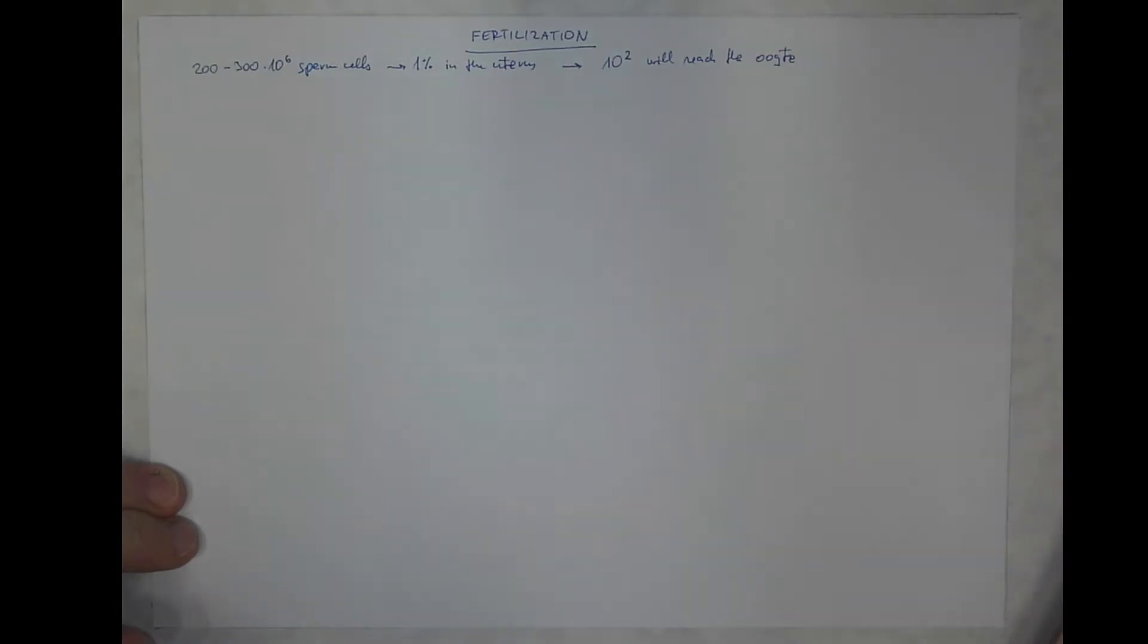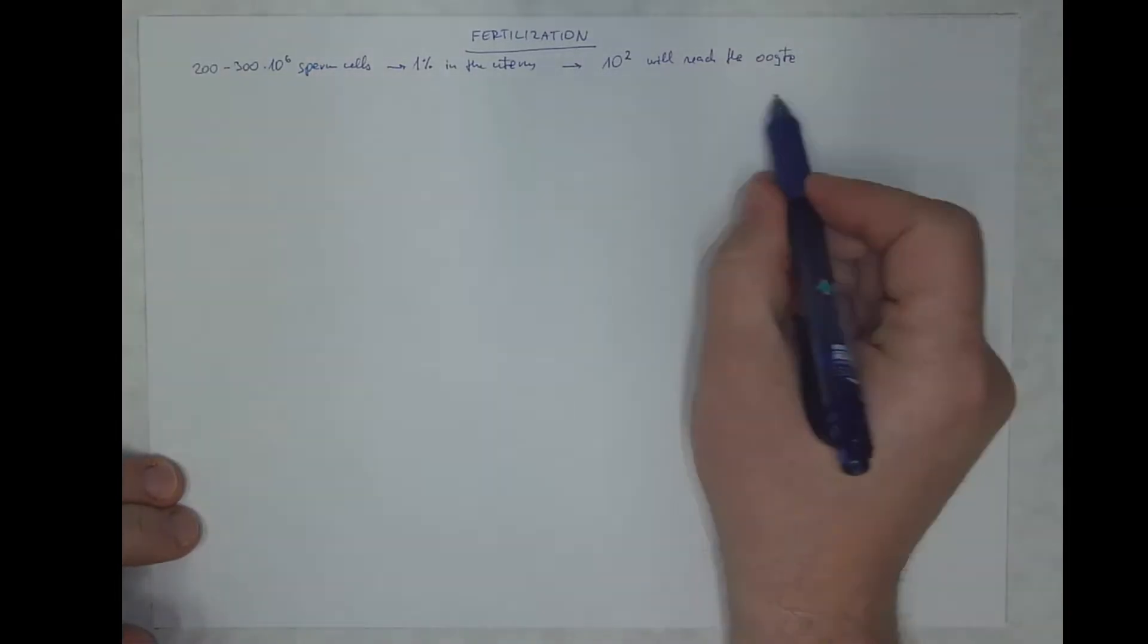So hundreds of sperm cells will reach the oocyte. The typical or most common meeting point is in the ampullary region of the oviduct. So there is a huge selection.